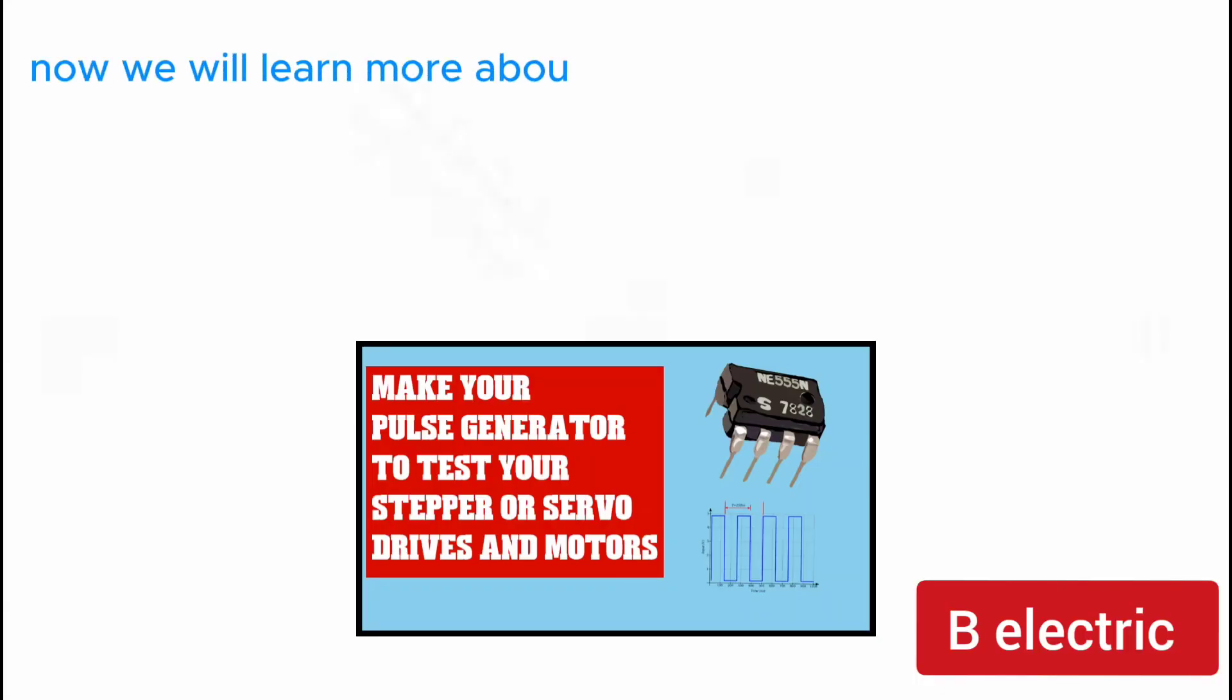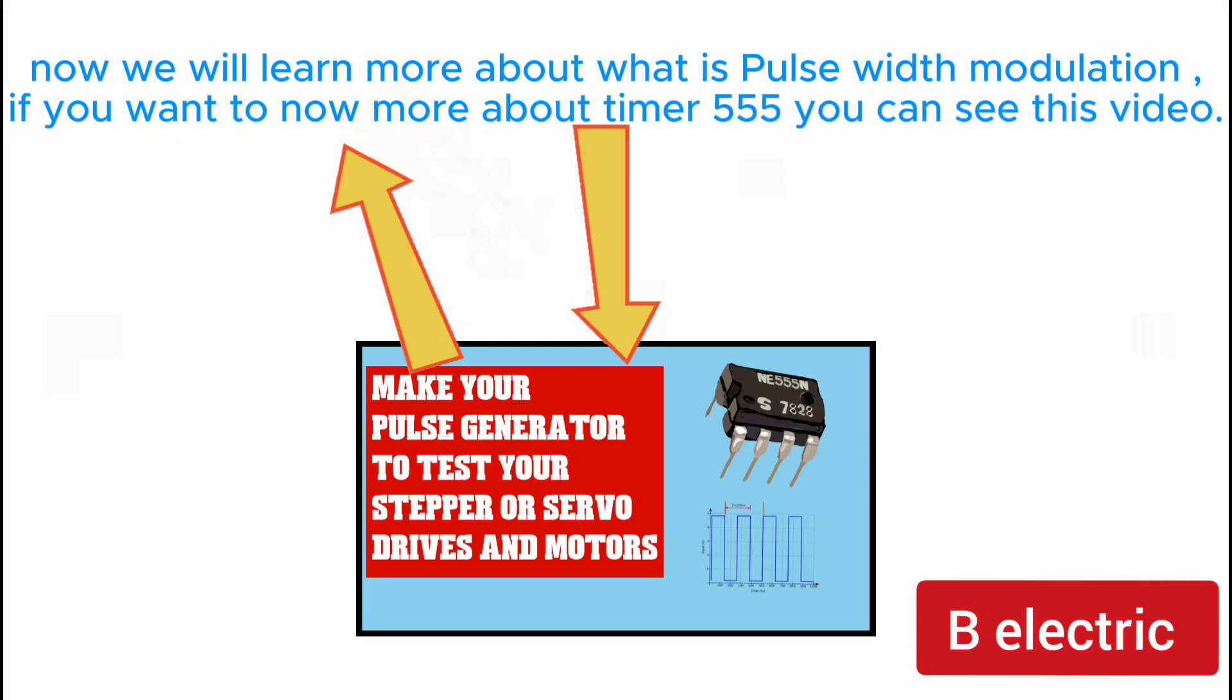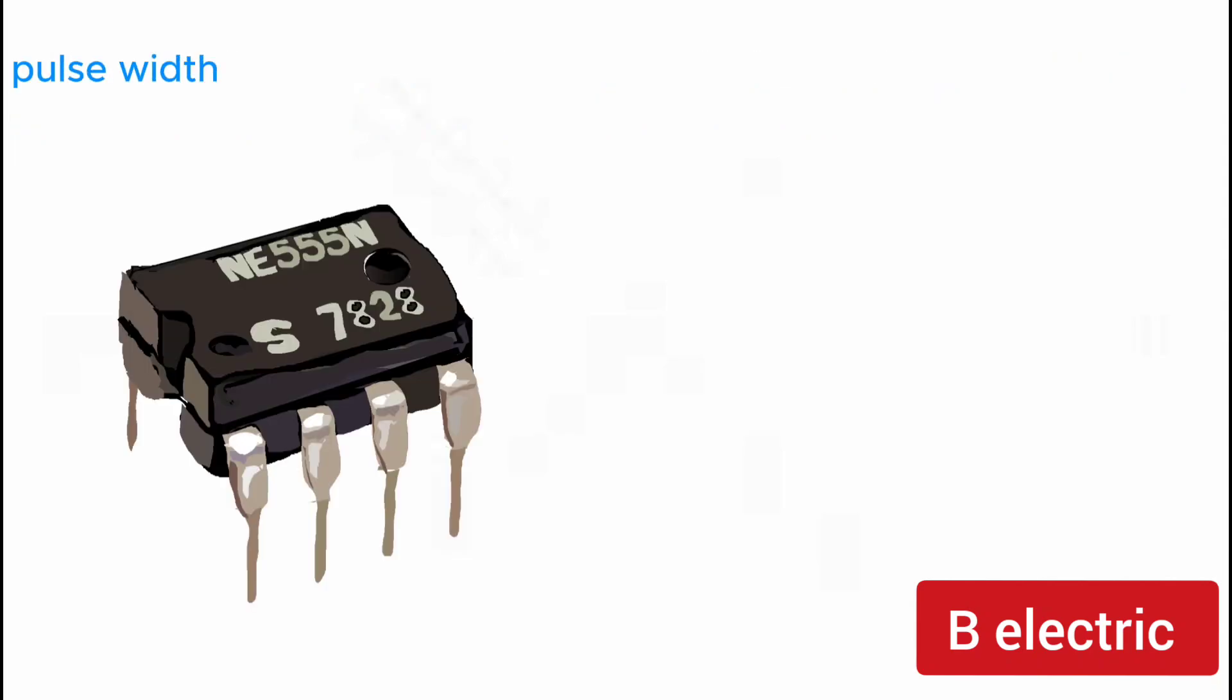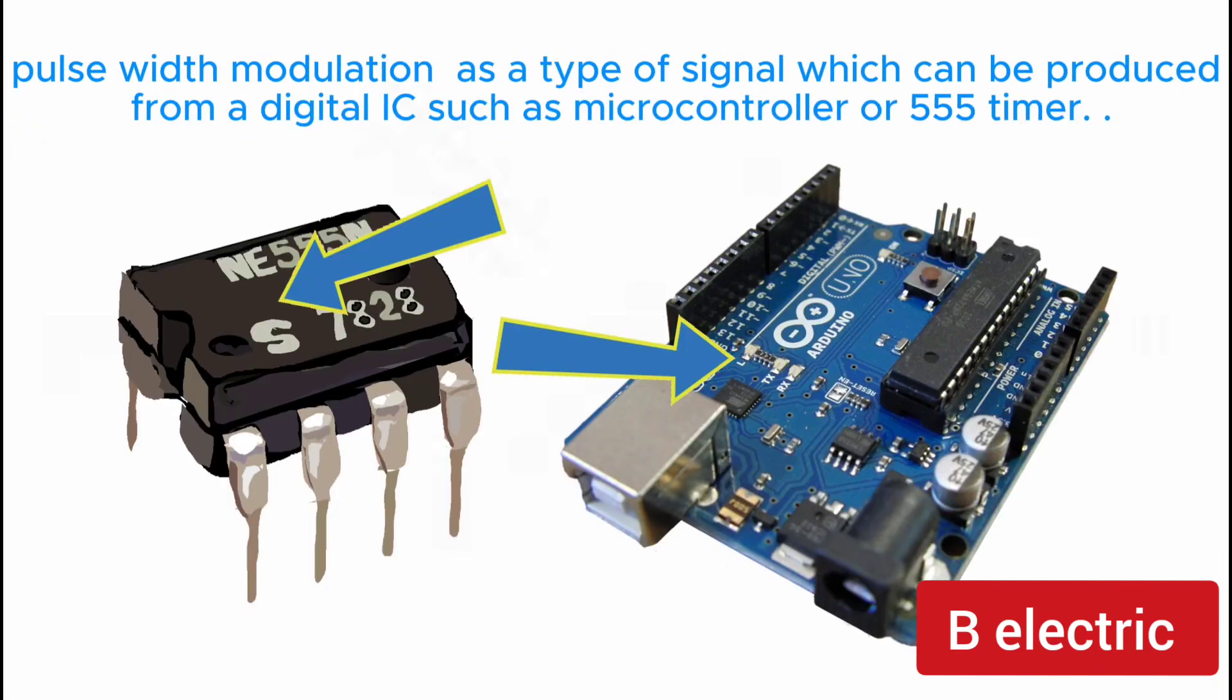Now we will learn more about what is Pulse Width Modulation. If you want to know more about timer 555 you can see this video. Pulse Width Modulation is a type of signal which can be produced from a digital IC such as microcontroller or 555 timer.